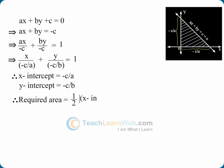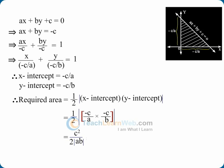Required area equals half modulus of (x-intercept)(y-intercept), which can be simplified as c²/2|ab| square units.